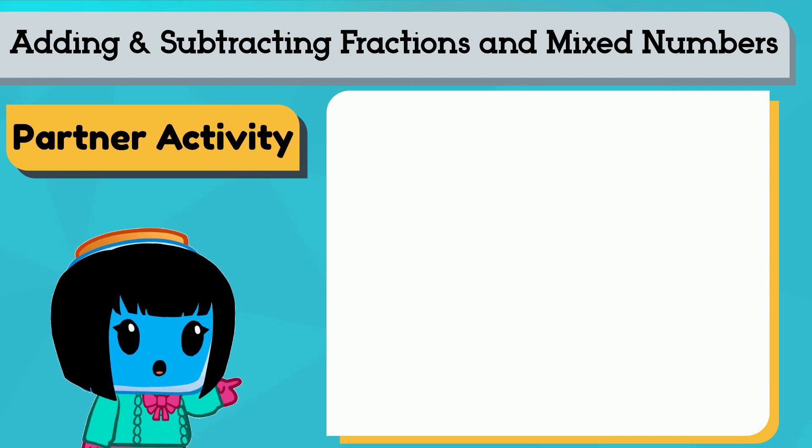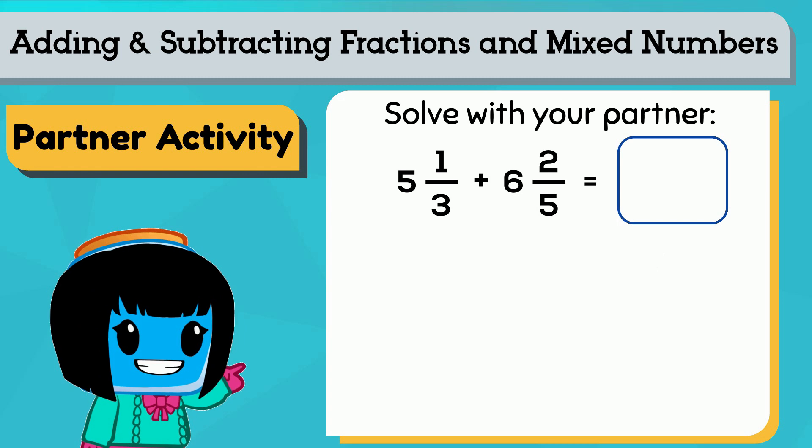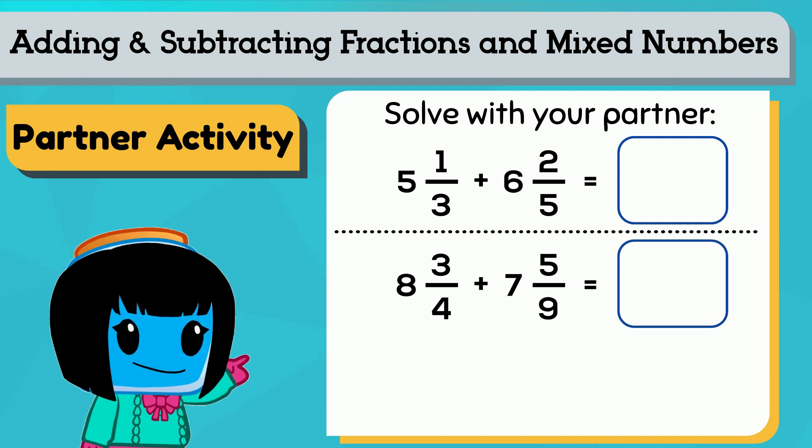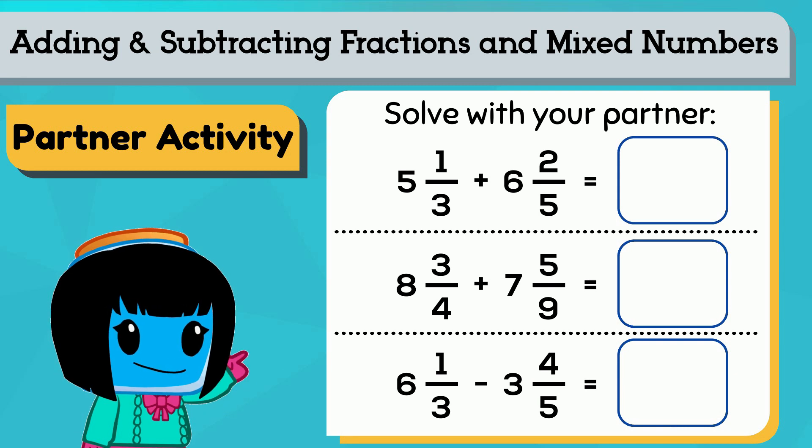You can do this with a partner. Together, solve five and one third plus six and two fifths. Eight and three fourths plus seven and five ninths. And try six and one third minus three and four fifths.